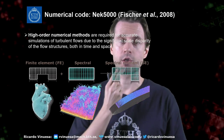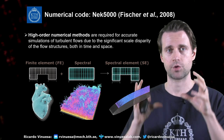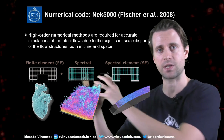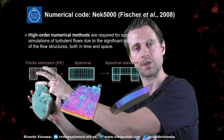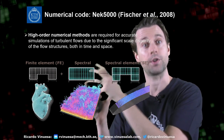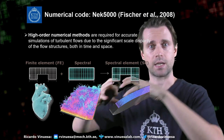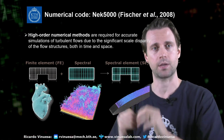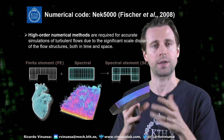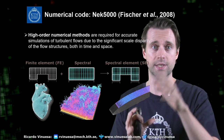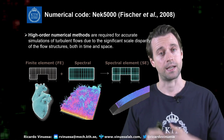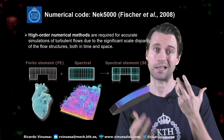We use the spectral element code Nek5000. This code combines the geometrical flexibility of finite elements — allowing us to solve very complex geometries — with the high-order convergence of spectral methods, so we can handle moderately complex wing geometries with very high accuracy, which is beneficial when solving turbulence in these cases.